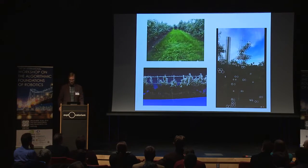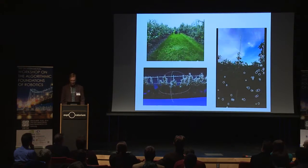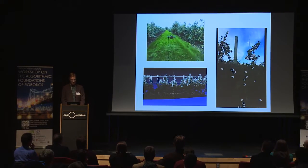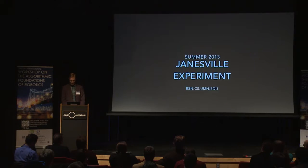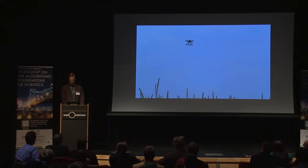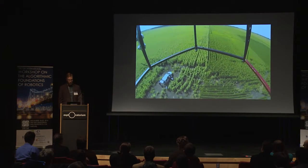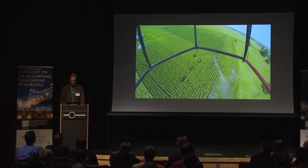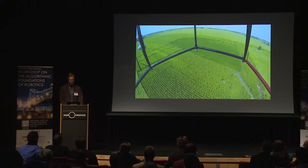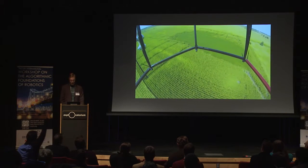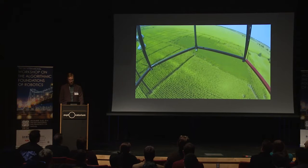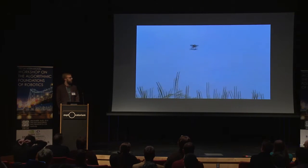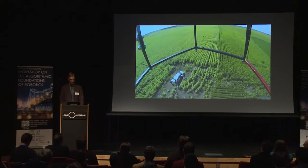In the Robotic Sensor Networks Lab, we are developing algorithms to automate inspection of apple orchards, so that farmers can learn valuable information about tree health and expected yield. We are also working on inspection of cornfields. Precision agriculture for row crops such as corn focuses on mapping regions of the field that are stressed in a particular way, so that custom treatment plans can be developed, allowing reduced overall chemical and fertilizer application, which saves money for farmers and helps the environment.